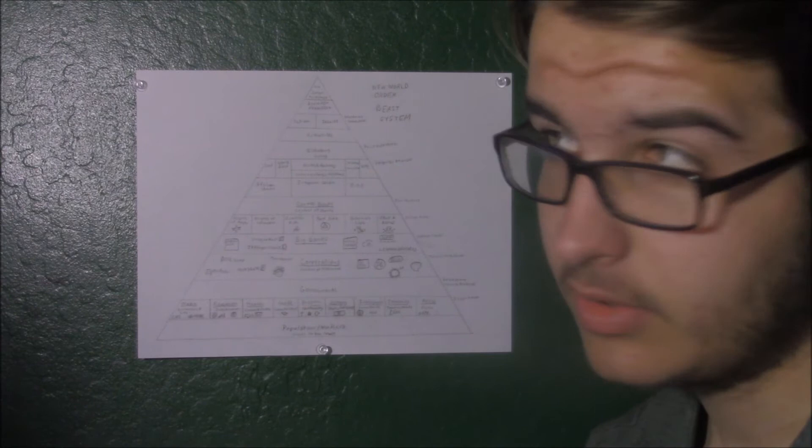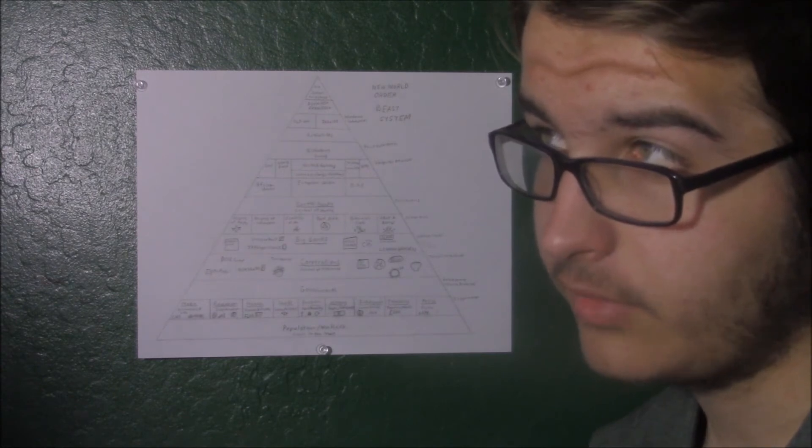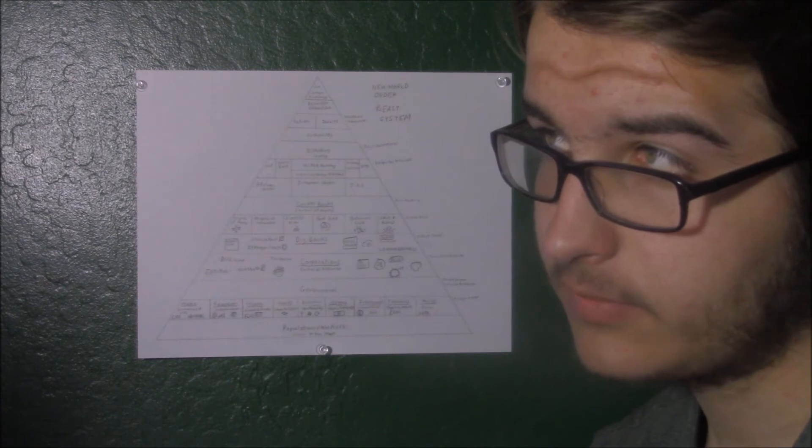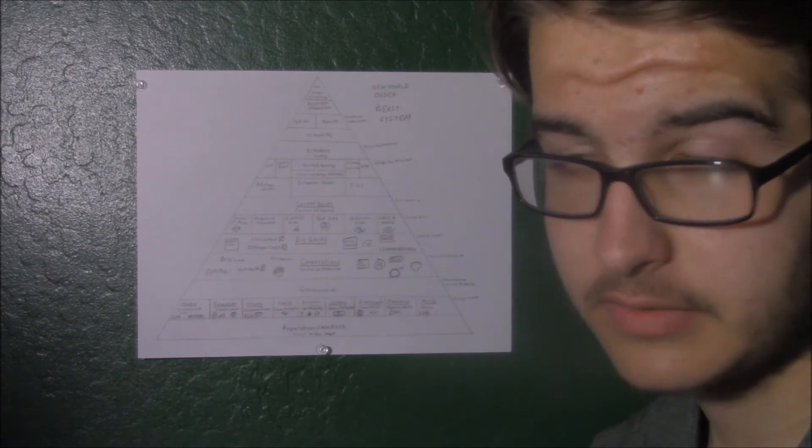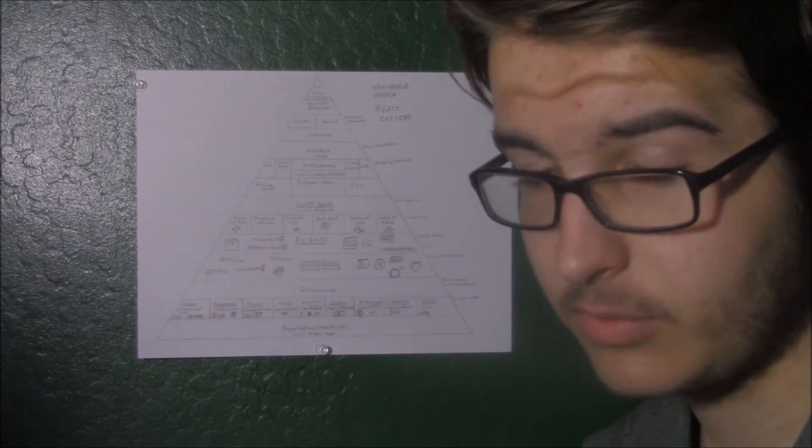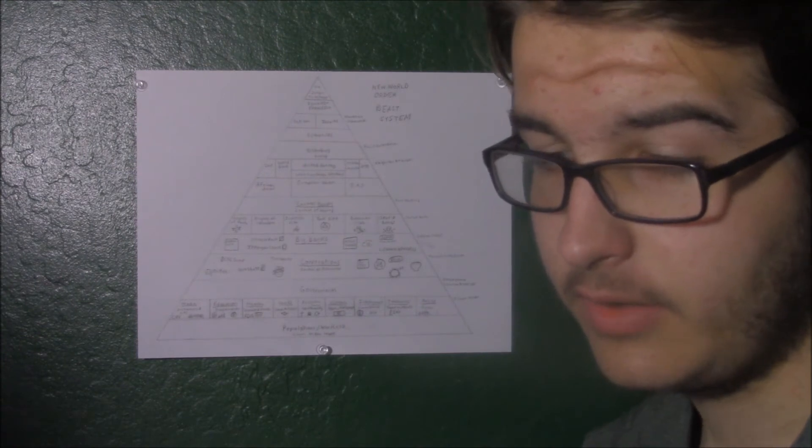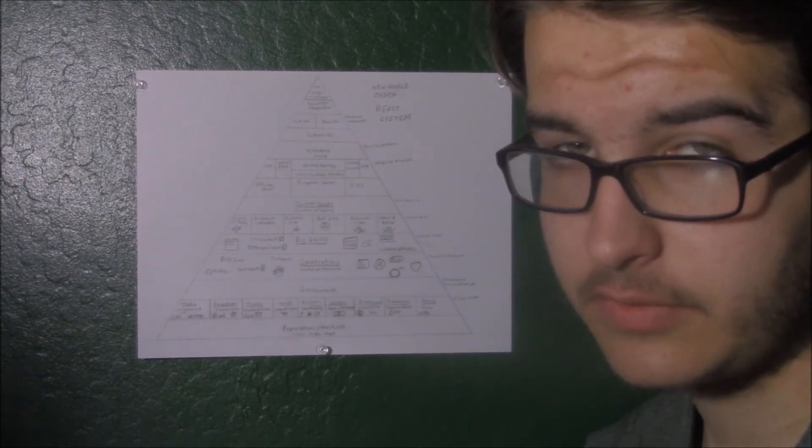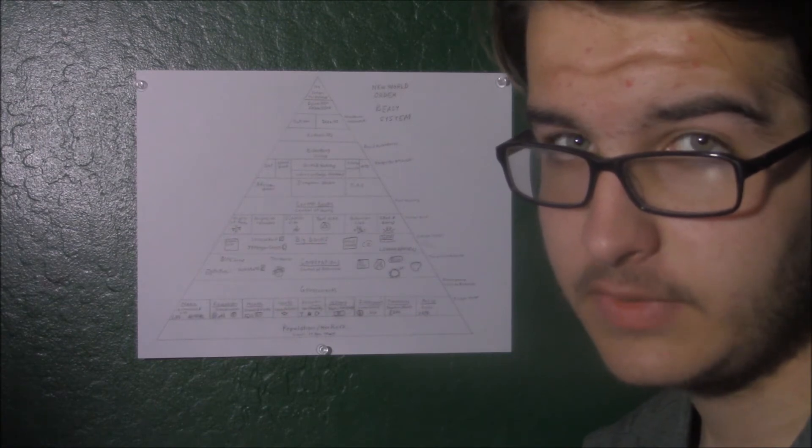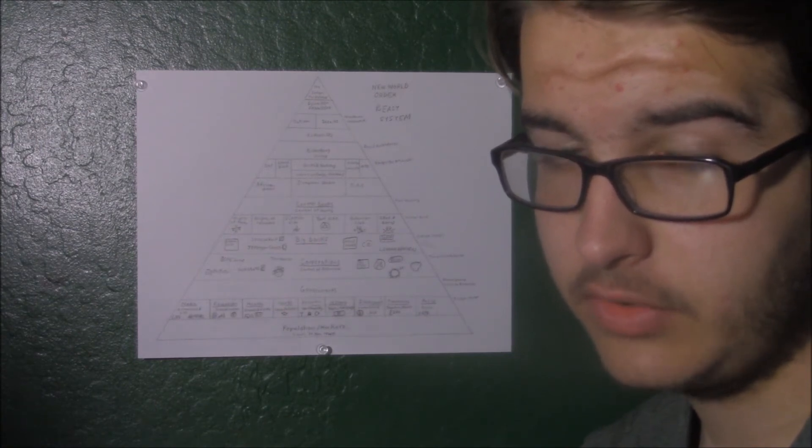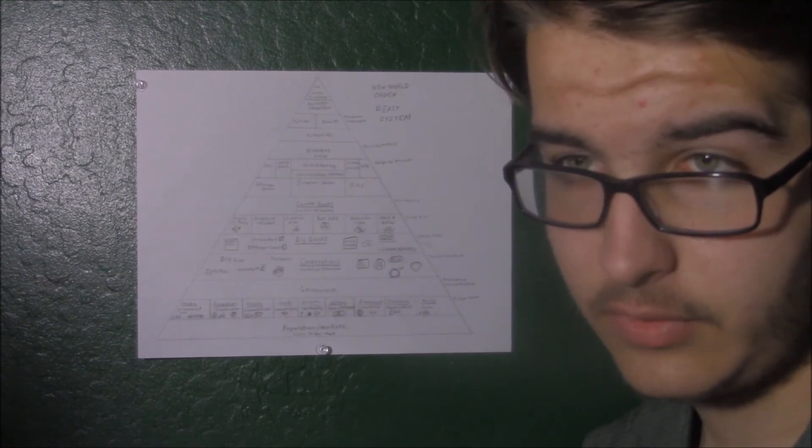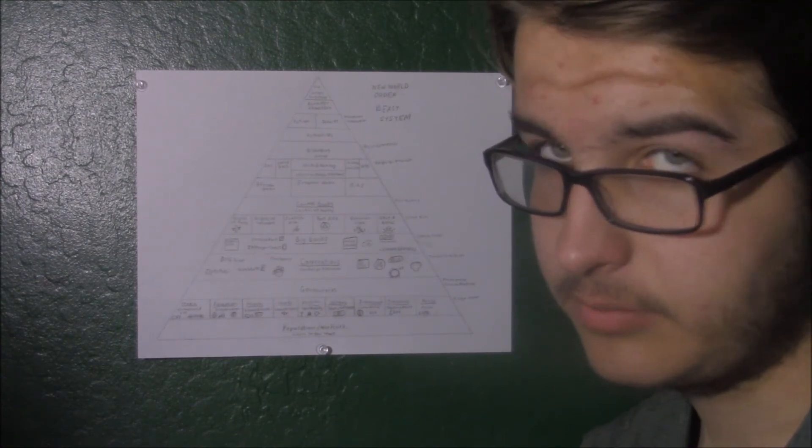Nestle is even bigger. They're the creator of Haagen-Dazs, Dryers, Hot Pockets, DiGiorno, Wonka, Baby Ruth, Stouffers, and many more brands, including 74 brands of water and multiple types of pet food. And all of these health corporations are used to give you disease, give you death, and make sure you don't get the nutrients you need to survive, and to pretty much poison you.